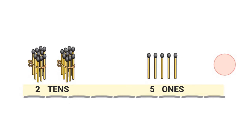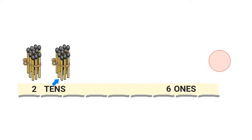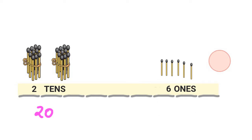Here I have 2 tens which is 20 matchsticks, and I have 1, 2, 3, 4, 5 — that's 5 ones. So I have 20 and 5 — 25 matchsticks in all. Here I have 2 tens which is 20 matchsticks, and I have 6 ones. Let me draw the 6 ones: 1, 2, 3, 4, 5, 6. I have 6 ones which means I have 20 and 6 — 26.